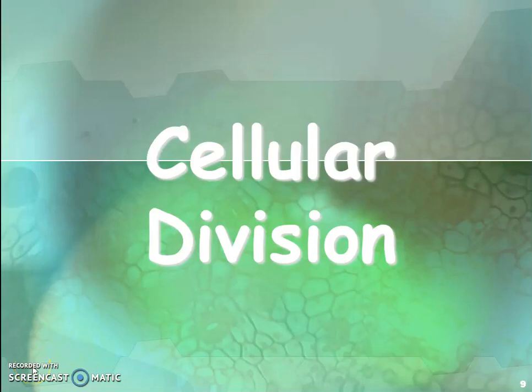Hi guys, this is Kumar. In this video I am going to talk about mitosis. Mitosis is one of the cellular divisions. There are two types of cell division: one is mitosis and another is meiosis. Mitosis is exact copying of the cells, and meiosis is making of the sex cells, which are also called gametes. Examples of gametes are sperm and the egg cell.